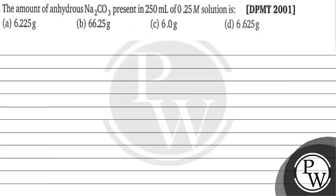Hello Bacho! Let's read this question. The question says: amount of anhydrous Na2CO3 equivalent to 50 ml of 0.25 molar solution is — option A is 6.225 gram, option B is 66.25 gram, option C is 6.0 gram, option D is 6.625 gram. The key concept for this question is...